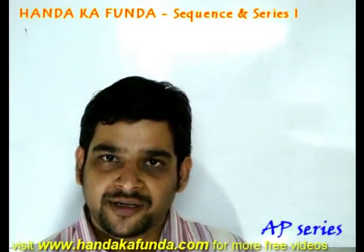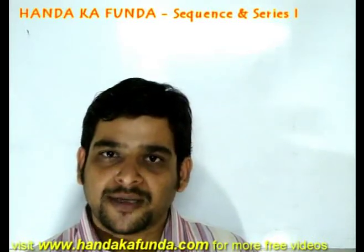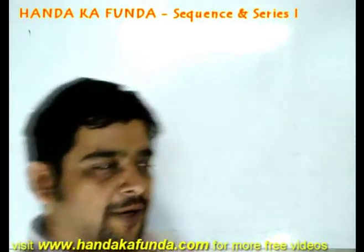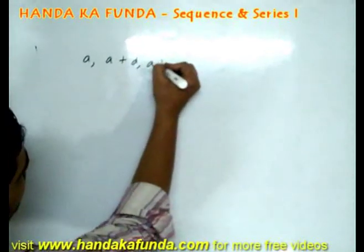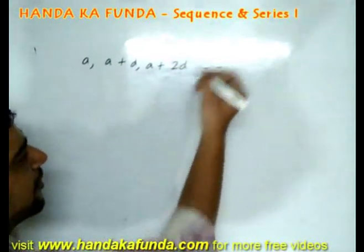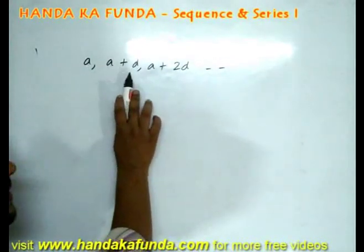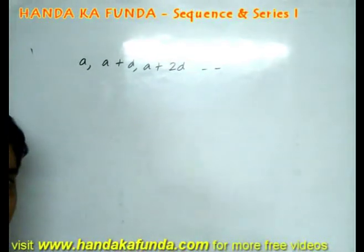In case of Arithmetic Progression, the difference between two terms remains constant. For example, the terms can be a, a plus d, a plus 2d and so on. As you can see, the difference between any two terms is d and that is remaining constant.